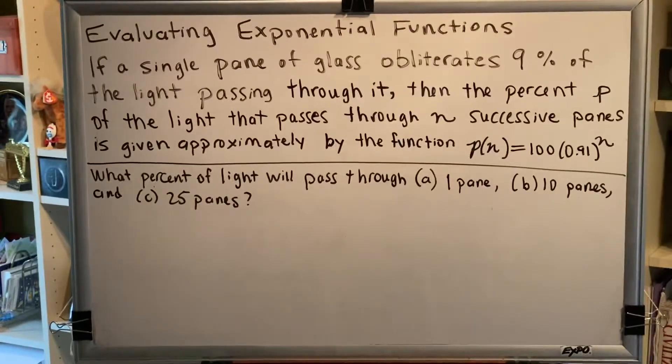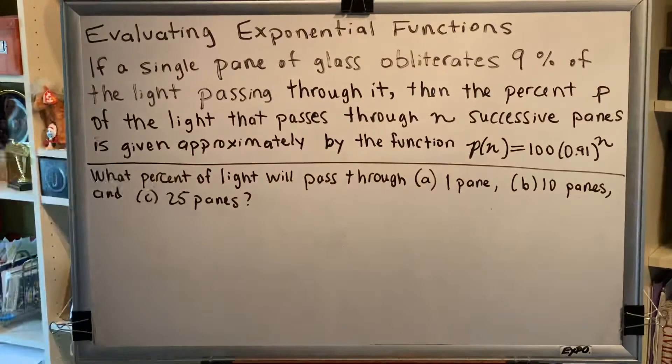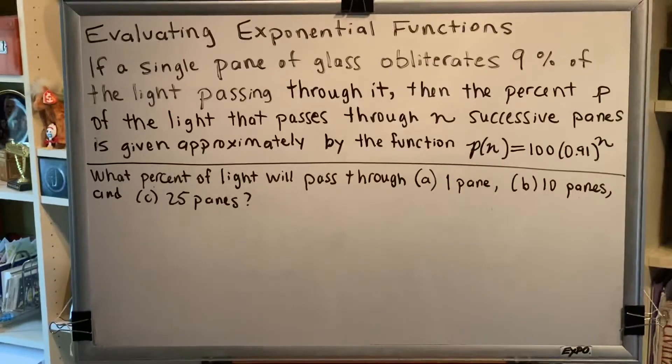The topic of this video is evaluating exponential functions. Let's look at a problem. If a single pane of glass obliterates 9% of the light passing through it, then the percent p of the light that passes through n successive panes is given approximately by the function p of n equals 100 times 0.91 to the n power. What percent of light will pass through (a) one pane, (b) 10 panes, and (c) 25 panes.